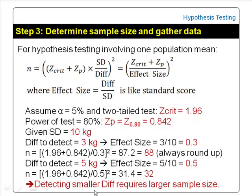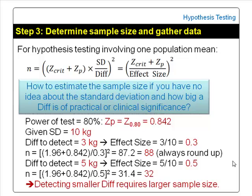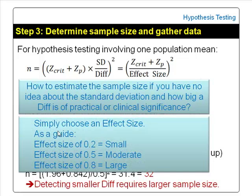From the formula, we can see that detecting a smaller difference requires a larger sample size. If you have no idea about the size of the standard deviation or how big a difference is of practical or clinical significance, you simply choose an effect size you want. As a guide, an effect size of 0.2 standard deviations is considered small, 0.5 is considered medium, and 0.8 or more is large. Note that effect size can be larger than 1.